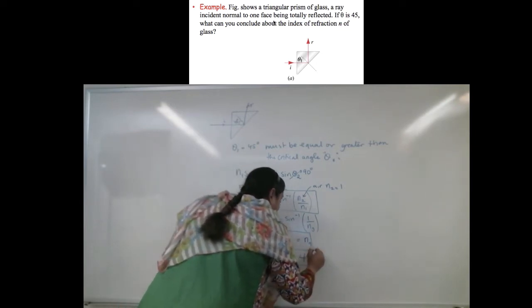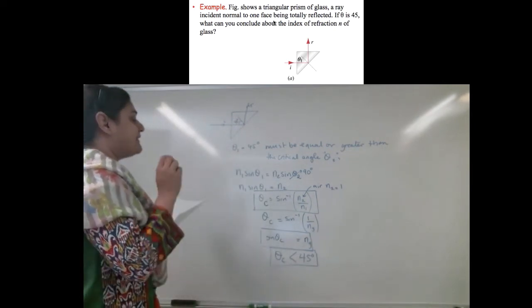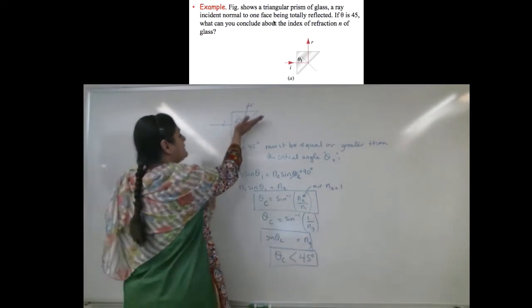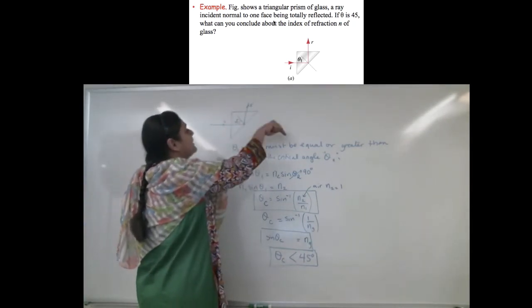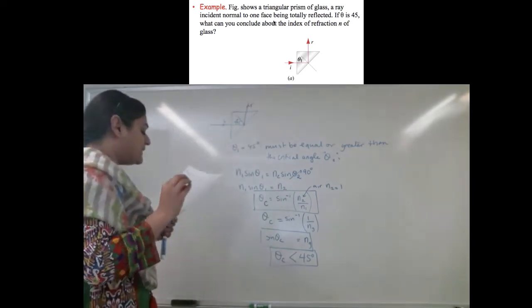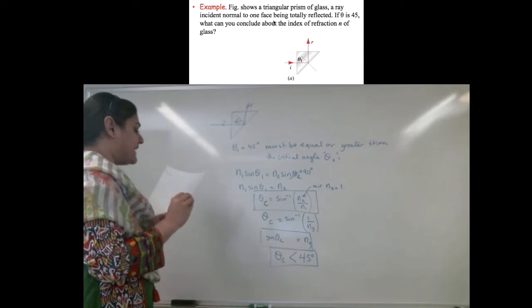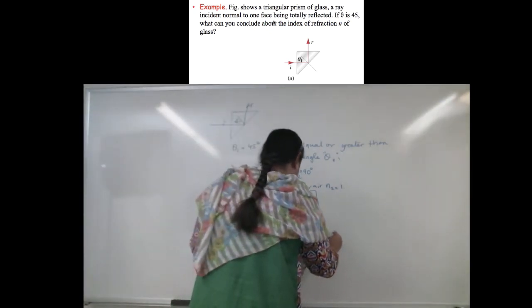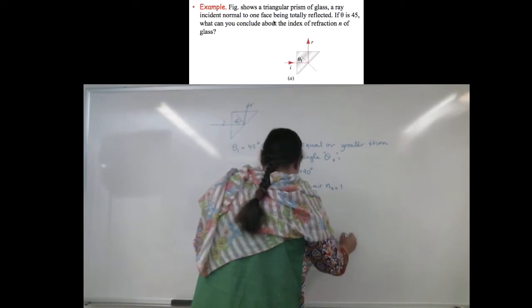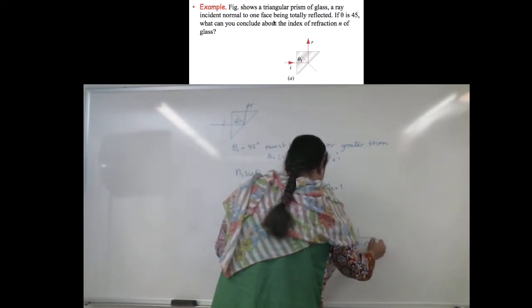Why? Because if it is greater than 45 degrees, then that means that part of this ray will be internally refracted. It's not totally internally refracted, but refracted outwards. So, here's what I know. If that is true, then that means Ng must be greater than 1 over sine of 45 degrees.